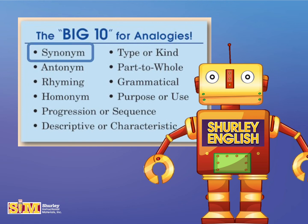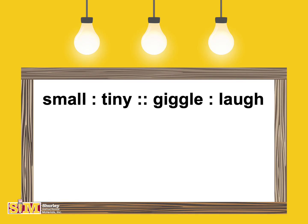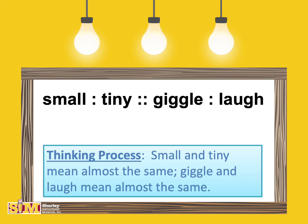We'll begin with a synonym analogy. This one says: small is to tiny as giggle is to laugh. We know this is a synonym analogy because small and tiny mean almost the same, and giggle and laugh mean almost the same.